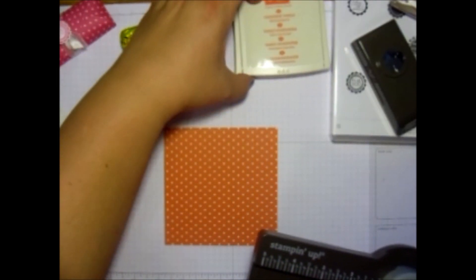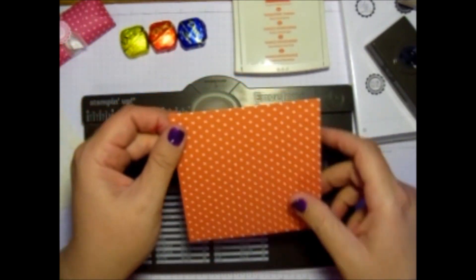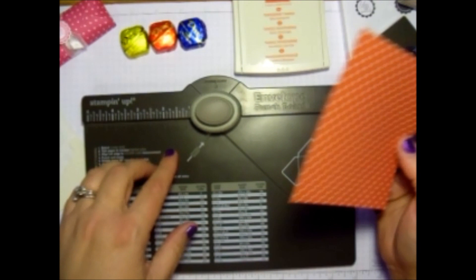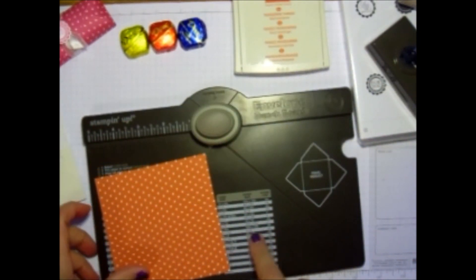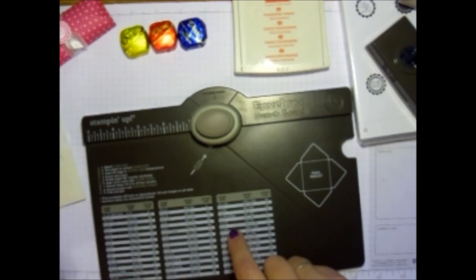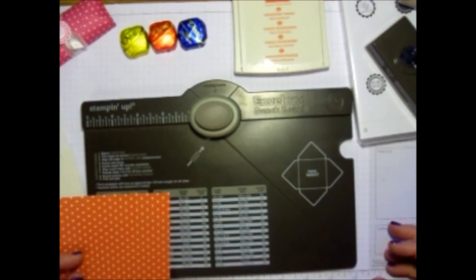So very easy. You get a four and a half by four and a half sheet of designer series paper. You get your envelope punch board. And that is not on here. So what we're making is not on here. You can come up with so many great ideas. This was just one.